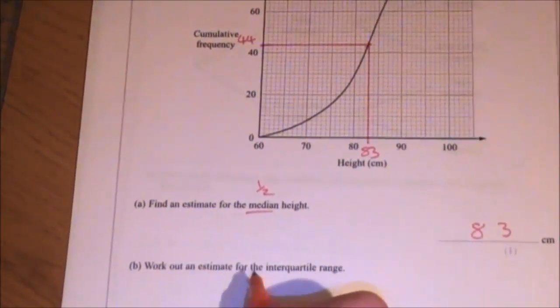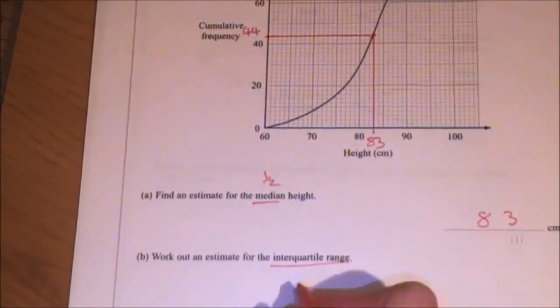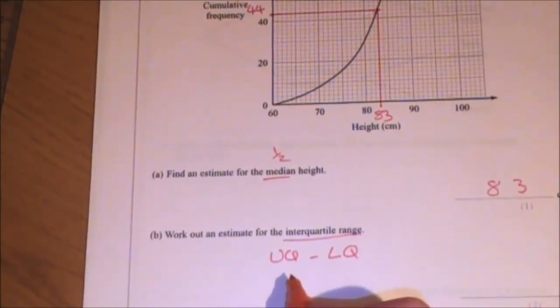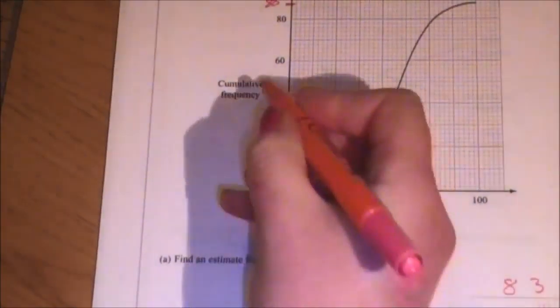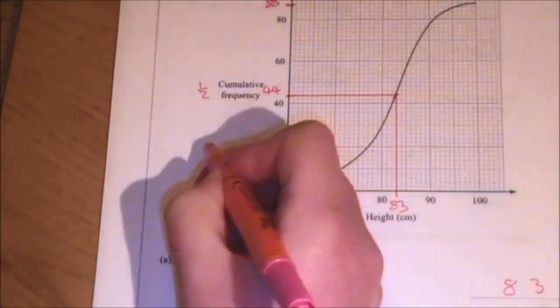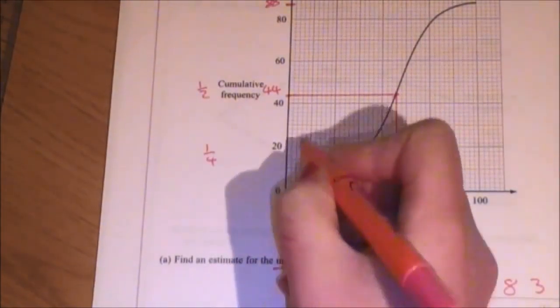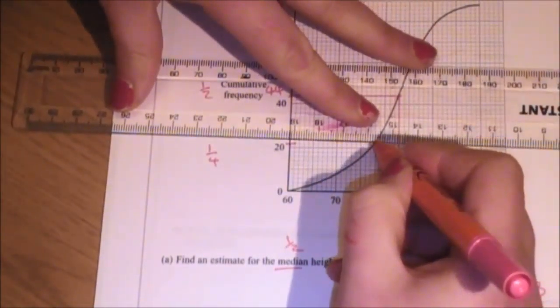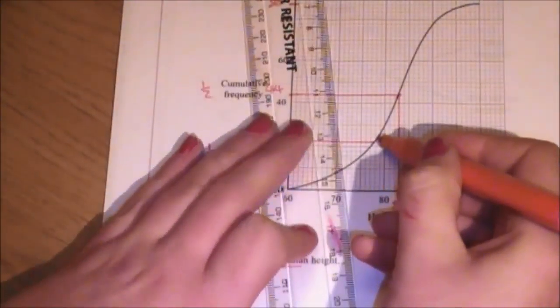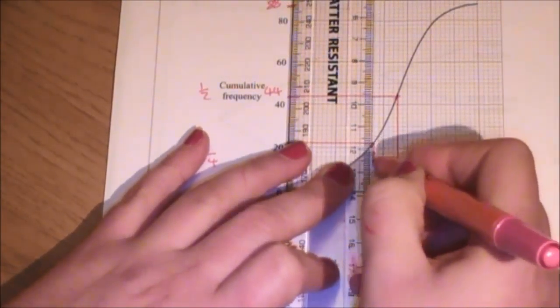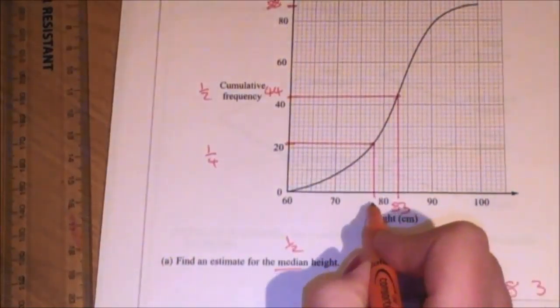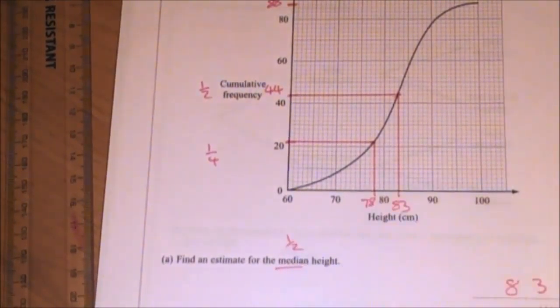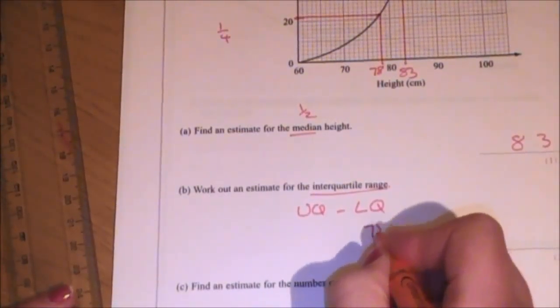Part B wants me to work out an estimate for the interquartile range. The interquartile range is the upper quartile take away the lower quartile, where the upper quartile is three quarters and the lower quartile is one quarter. Keeping in mind that 44 was a half, in order to find the one quarter point, I need to go to 22. So there's 22. So I read across and down. That's going to give me 75, 76, 77, 78. So my lower quartile is 78.